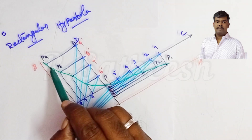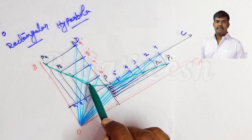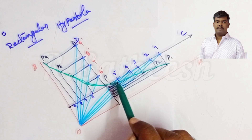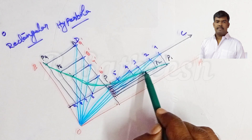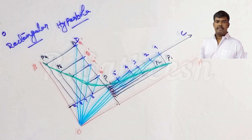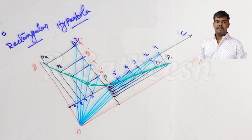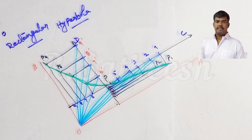Join all points using a freehand curve. This curve is the hyperbolic curve — the green color curve shown is the rectangular hyperbola. Now for this problem, we also need to draw a tangent and normal. Specifically, the problem asks to draw a tangent to the curve at a point 20 mm from an asymptote.